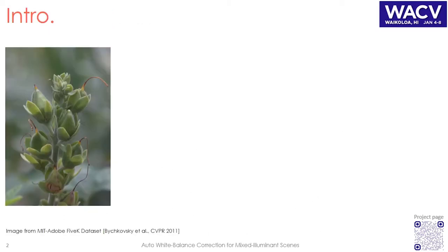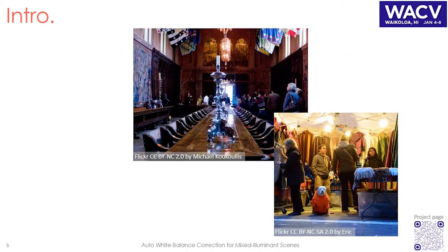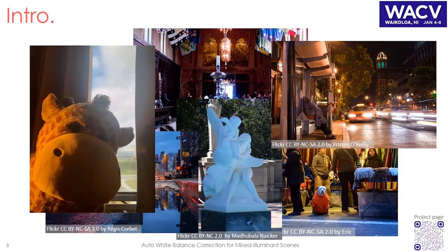Auto white balance plays an important role in rendering the final colors in a photograph. Most auto white balance modules assume a single light source is present per scene. However, real scenes often have mixed lighting conditions. Performing single-illuminant auto white balance on scenes with multiple illuminations often produces unsatisfactory results.